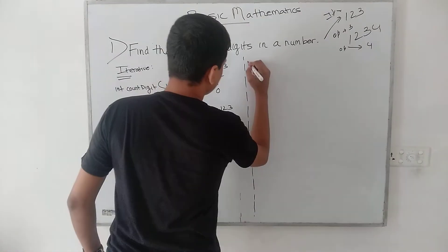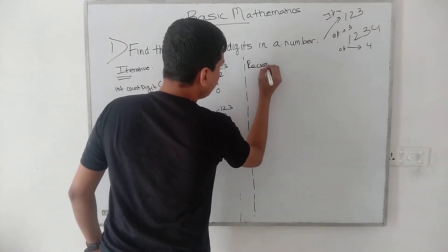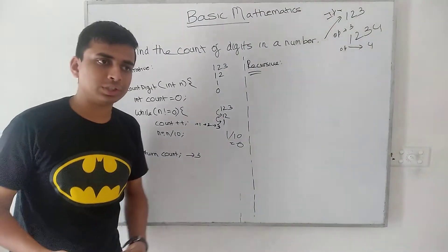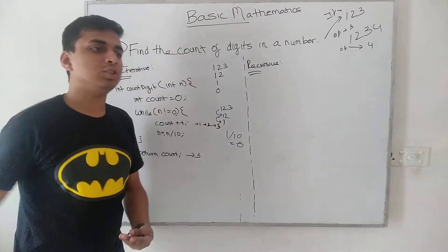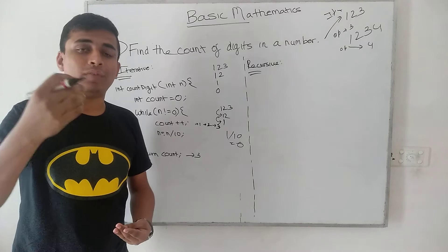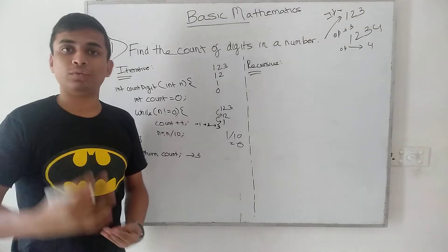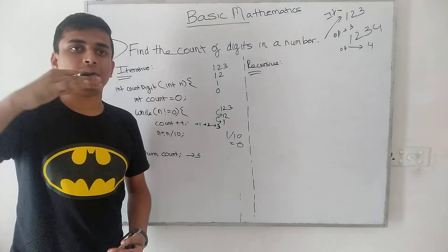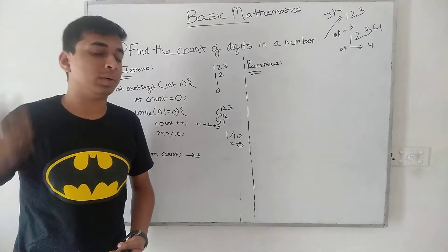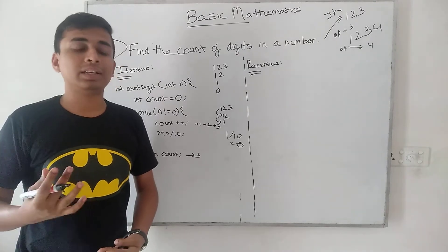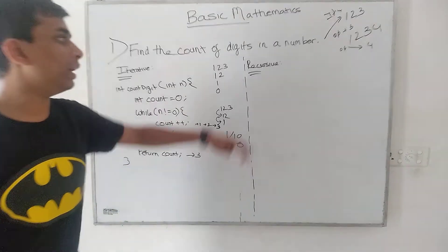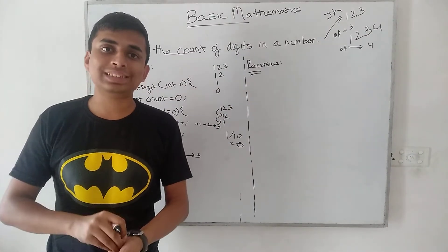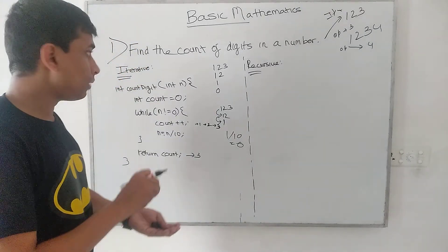Now for the recursive approach. In recursion, we call that particular function from the function body itself, and we also provide a base condition where the function stops. Otherwise, it will lead to a stack overflow, which means the stack is overflowed with the number of calls made to a function, causing an out-of-memory error. So in order to prevent that, we must always provide a base case to your recursive solution.